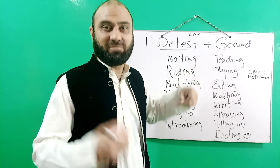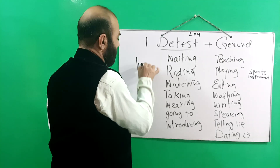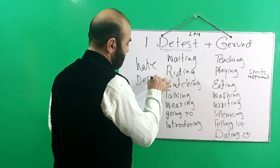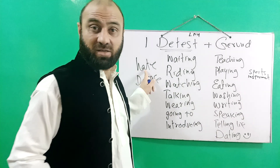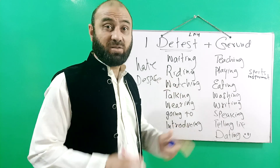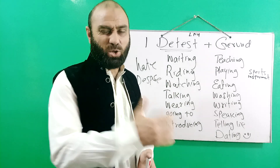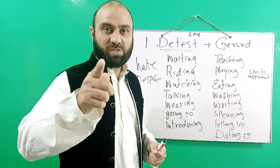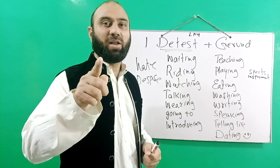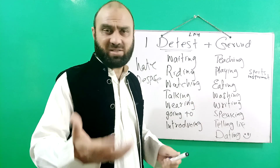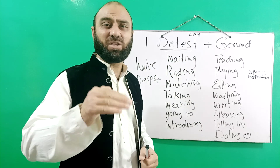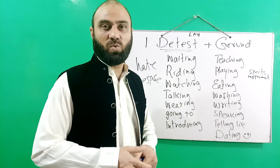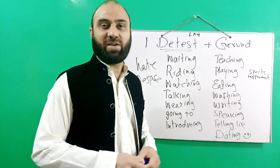We can use two terms instead of 'detest': hate and despise. I hate and I despise — but because you are smart, speak smart English. Instead of 'hate,' use 'detest.' I detest using general vocabularies, so I use advanced, different vocabularies. Thank you so much for watching. Please share with your friends and have a great day!